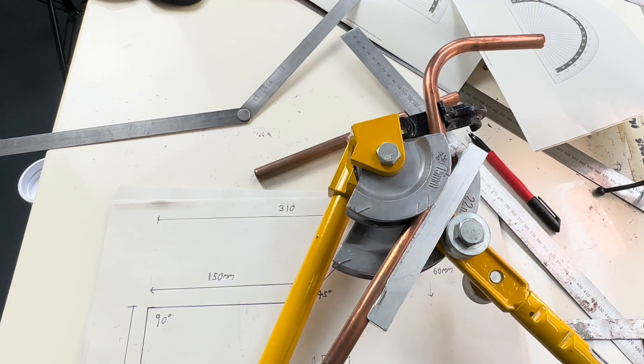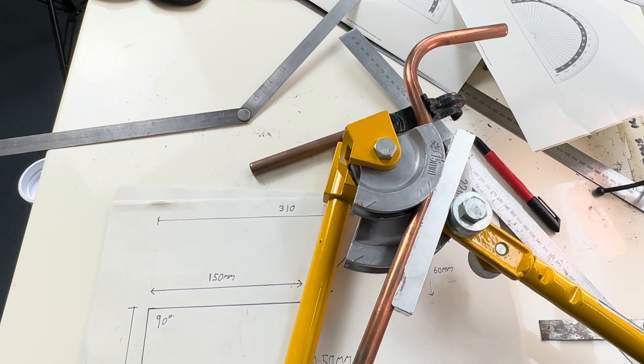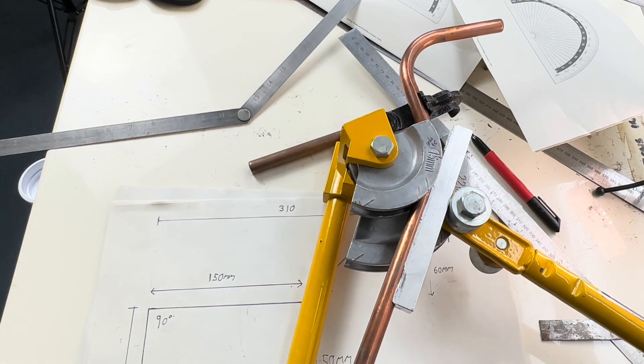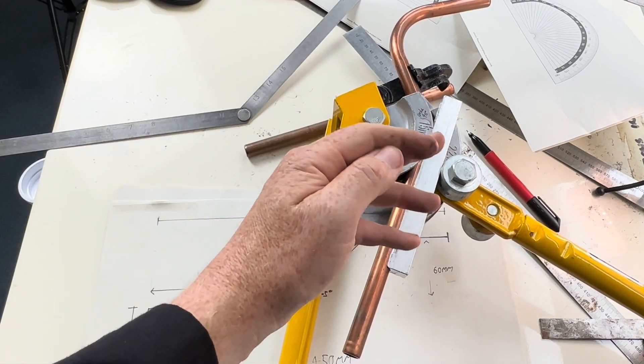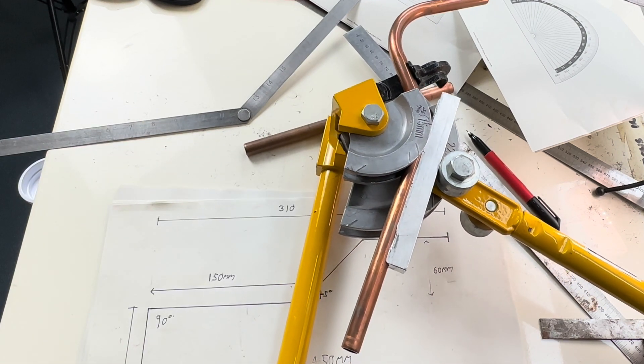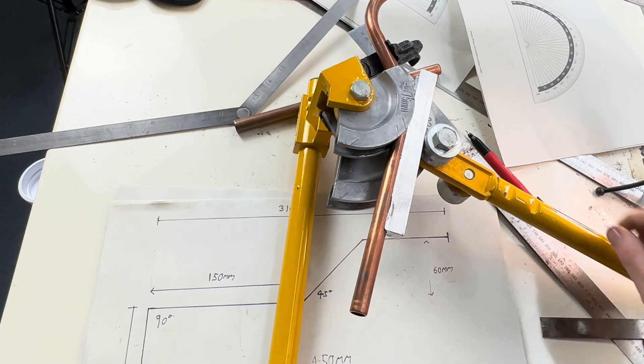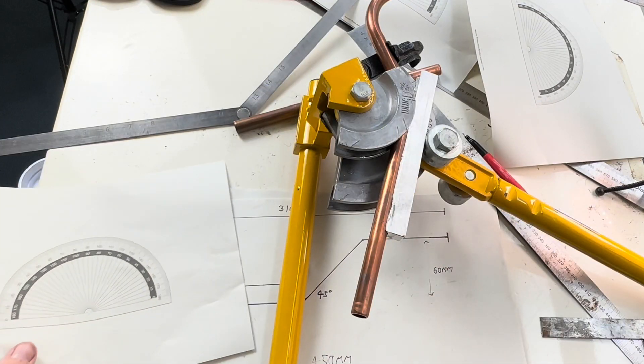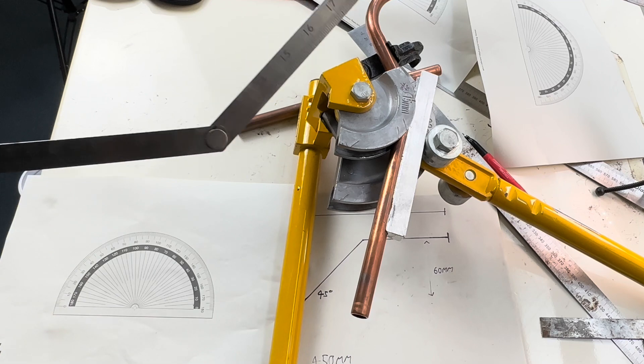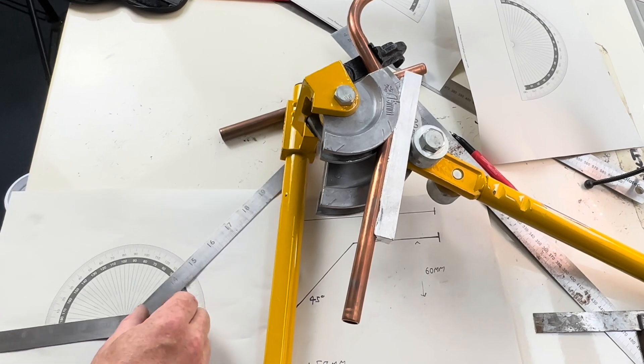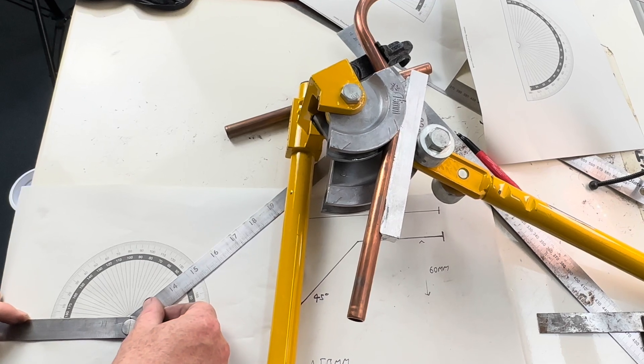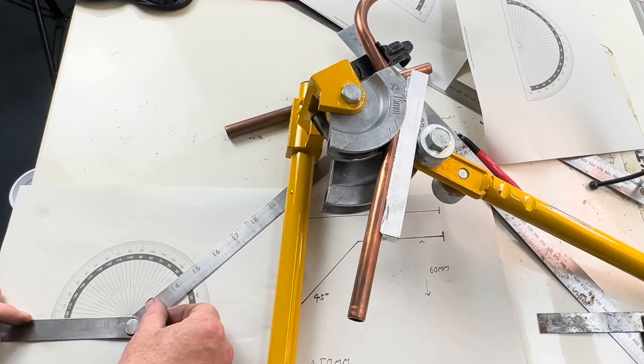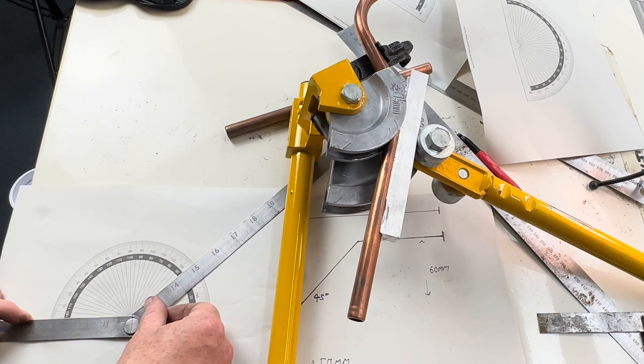When we bend the pipe, you can use the marks on the former as a gauge to where 45 degrees is going to be. But it's recommended that you use the folding ruler set to the 45 degree angle for extra accuracy. Like so.